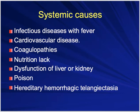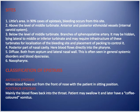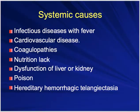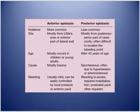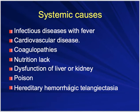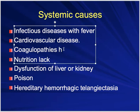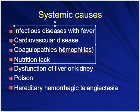Systemic causes include coagulopathies such as hemophilia, where there is a deficiency of clotting factors causing prolonged bleeding time that is very hard to stop. Von Willebrand disease is another example of a coagulopathy that can cause epistaxis.